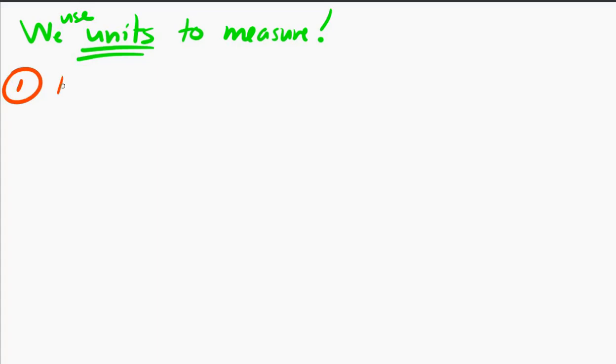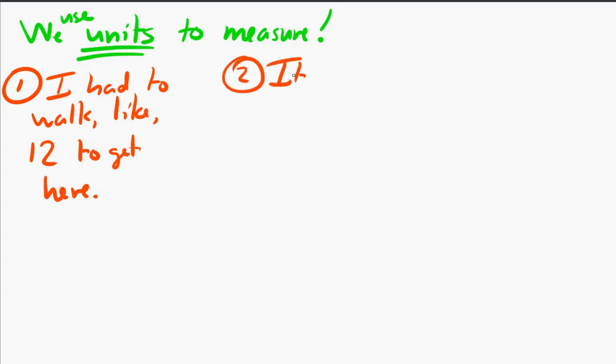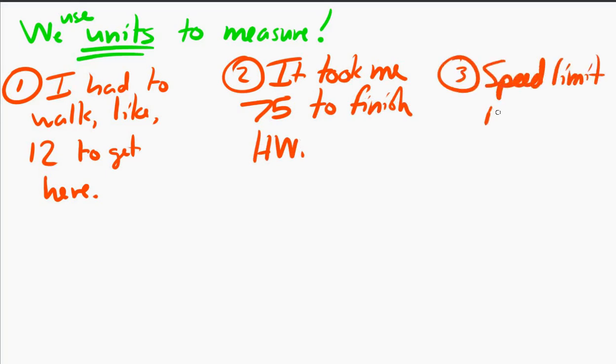First one, I had to walk like 12 to get here. Second one, it took me 75 to finish my homework. And third one, the speed limit is 95. So these three quotes probably don't sit well with you.